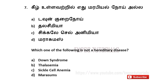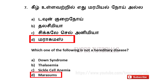Seventh one. Which one of the following is not a hereditary disease? A) Down syndrome, B) Thalassemia, C) Sickle cell anemia, D) Marasmus. And the answer is D — Marasmus.